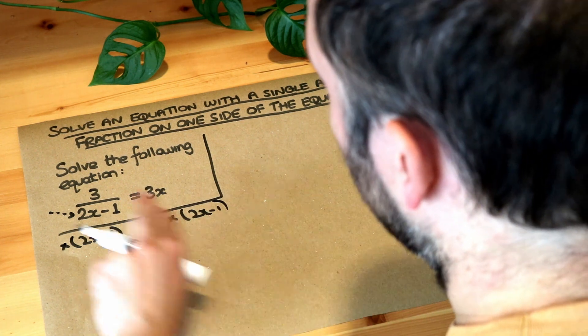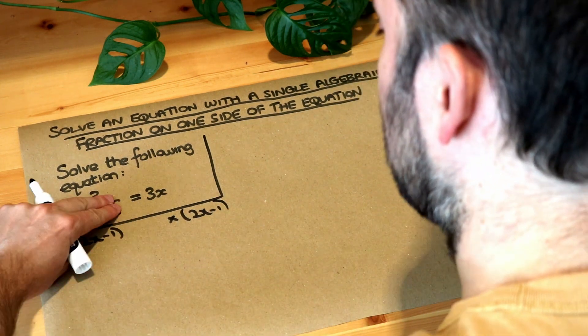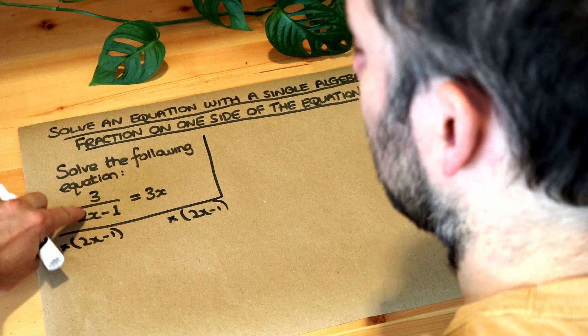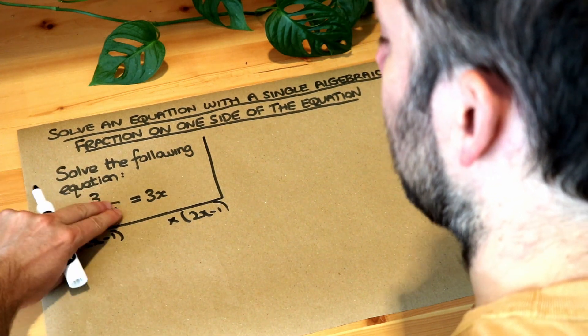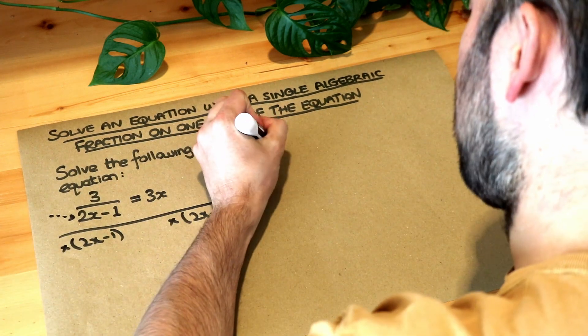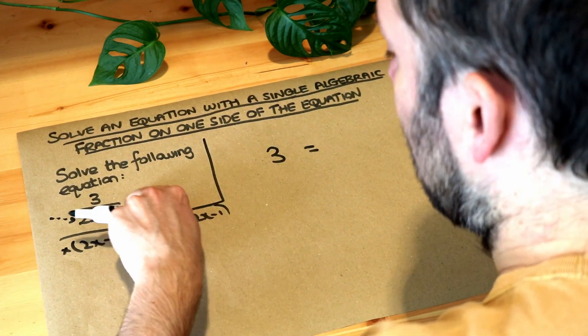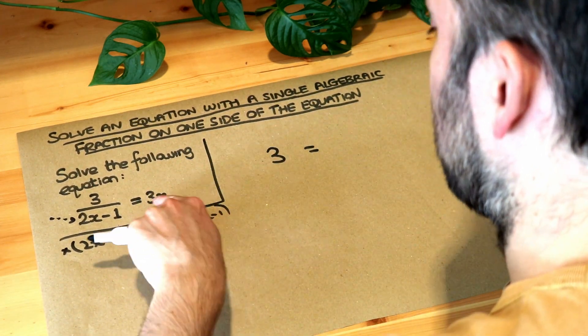So if we do that, if I multiply the left-hand side of the equation by 2x minus 1, it just gets rid of the over 2x minus 1 because the times cancels out that divide, and you're just left with 3. And if we times the right-hand side of this equation by 2x minus 1,